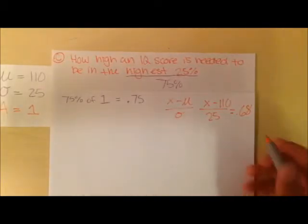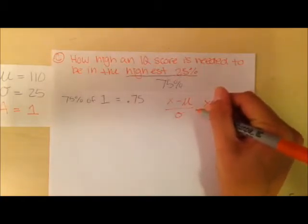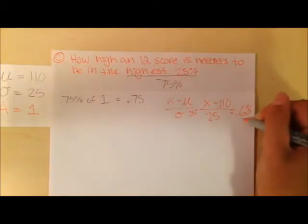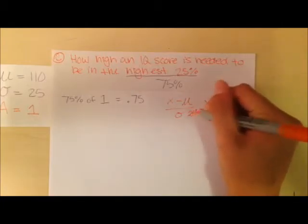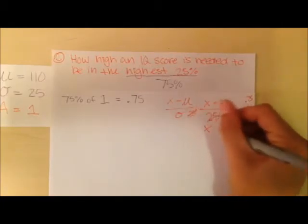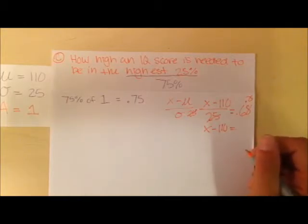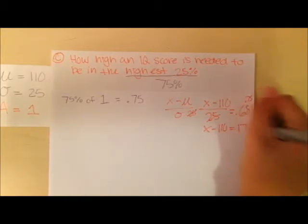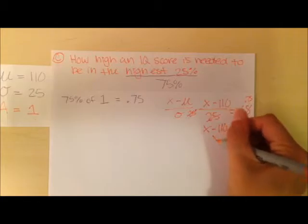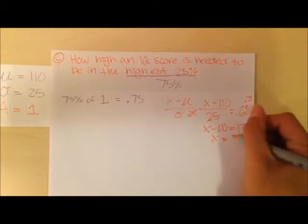Now we just solve for X. So we times both sides by 25. That gives us X minus 110 equals 17. And then, X equals 127.